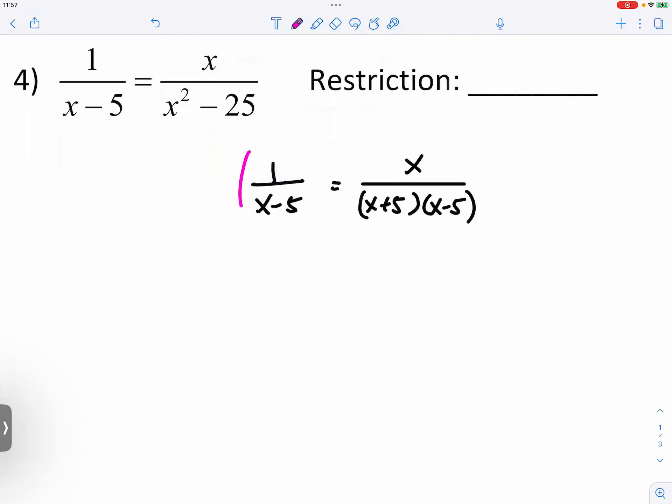So when you multiply both sides, the common denominator would be x plus 5 and x minus 5. And then on the left it is simply x plus 5, on the right is simply x.